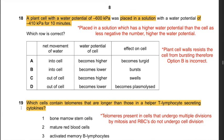Question 18: A plant cell with a water potential of −600 kPa was placed in a solution with a water potential of −410 kPa for 10 minutes. The solution has a higher water potential than the cell (less negative = higher). Therefore, the net movement of water will be into the cell. As a result, the water potential of the cell becomes higher and the cell becomes turgid. Plant cells do not burst as they have a strong cell wall. Therefore the answer is A.